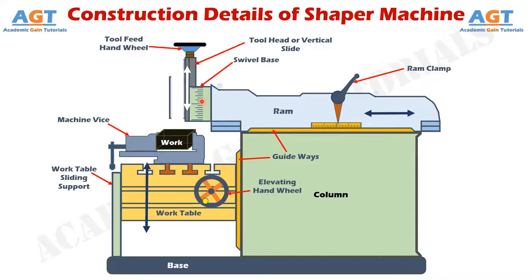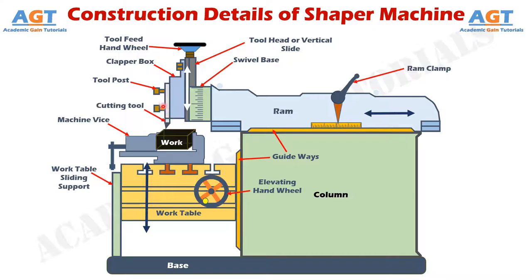Connected to the tool head there is a clapper box, which holds the tool post and the single point cutting tool sitting on it. The tool post holds the cutting tool firmly throughout the whole shaping process. Just like a lathe machine, the shaping machine also uses a single point cutting tool. The difference is that the lathe machine gives a helical cut while the shaper machine gives a linear cut. This single point cutting tool is usually made of HSS (high speed steel), but can also be made of high carbon steel.